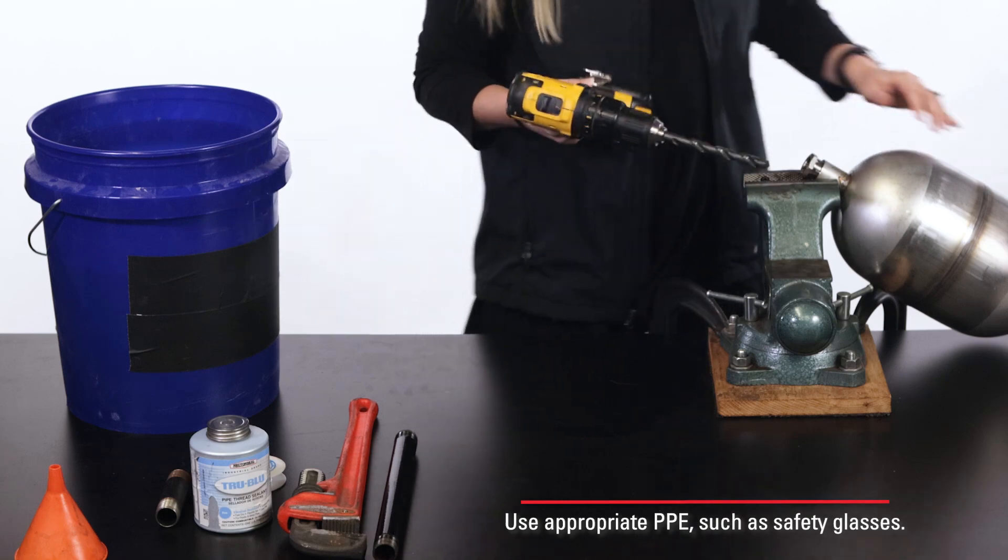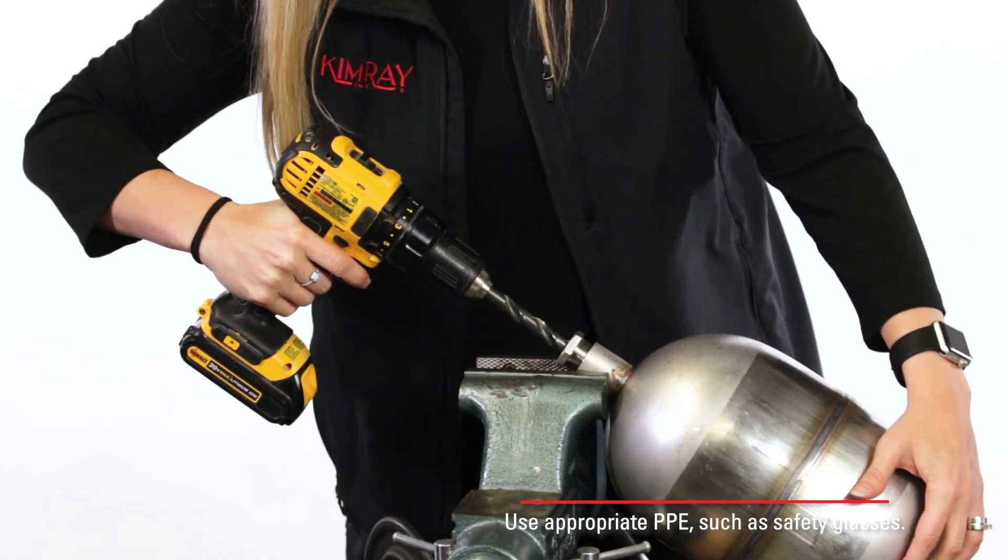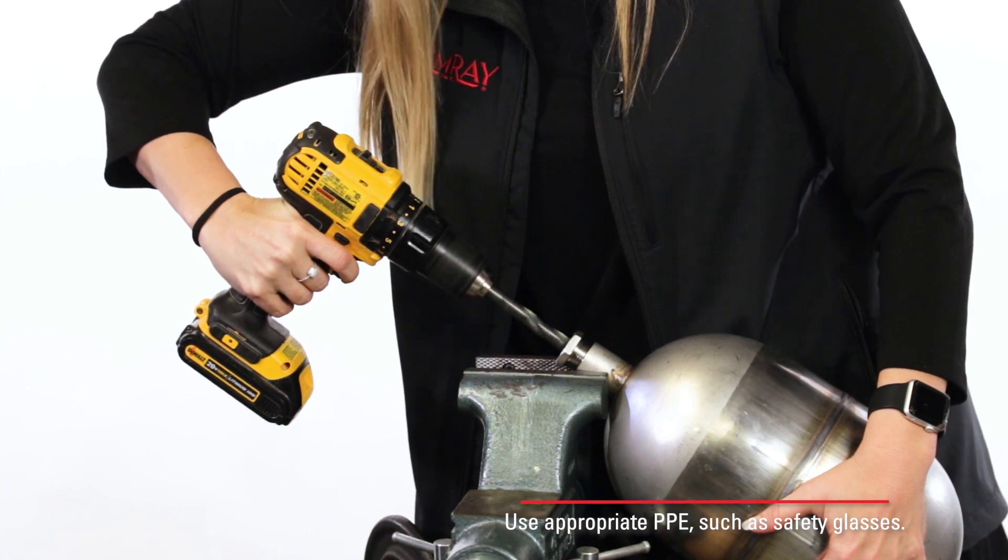Next, drill a hole through the end of the float ball where the coupling is. Typically, a half-inch hole will work.